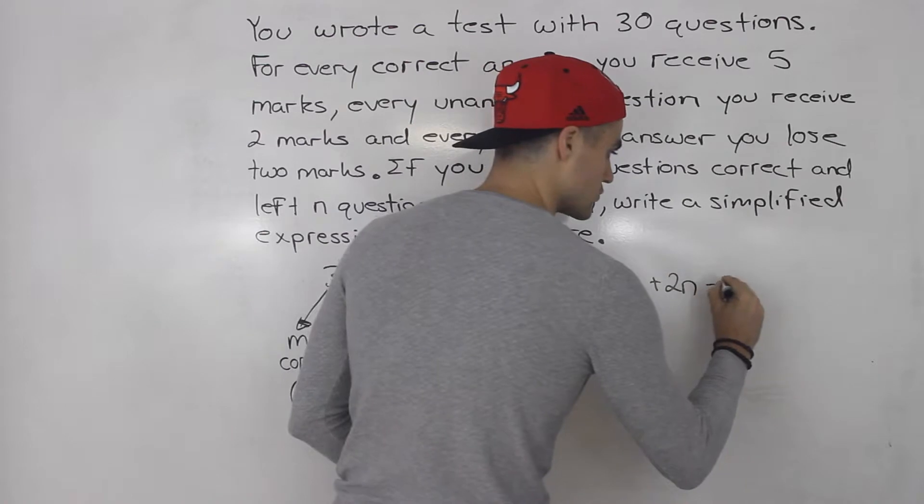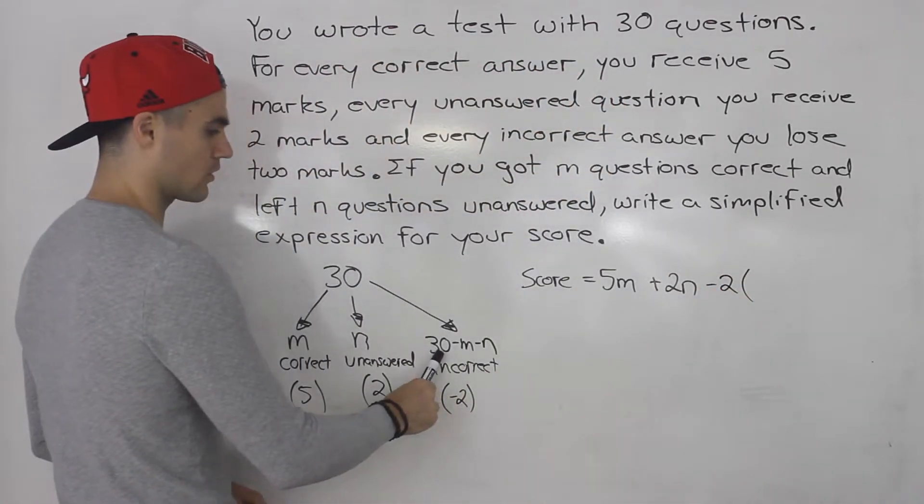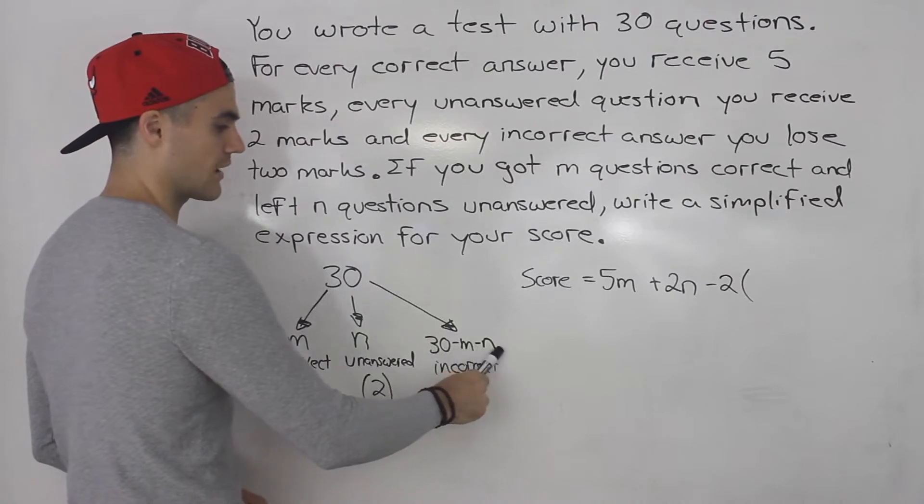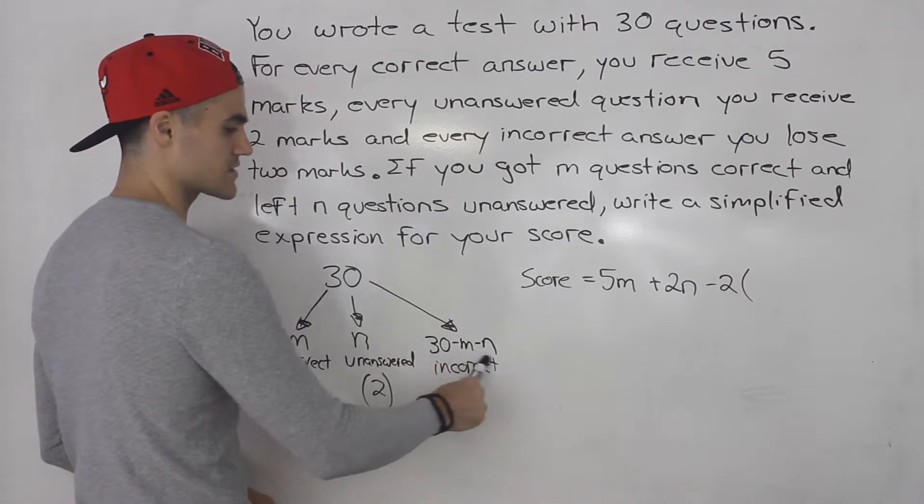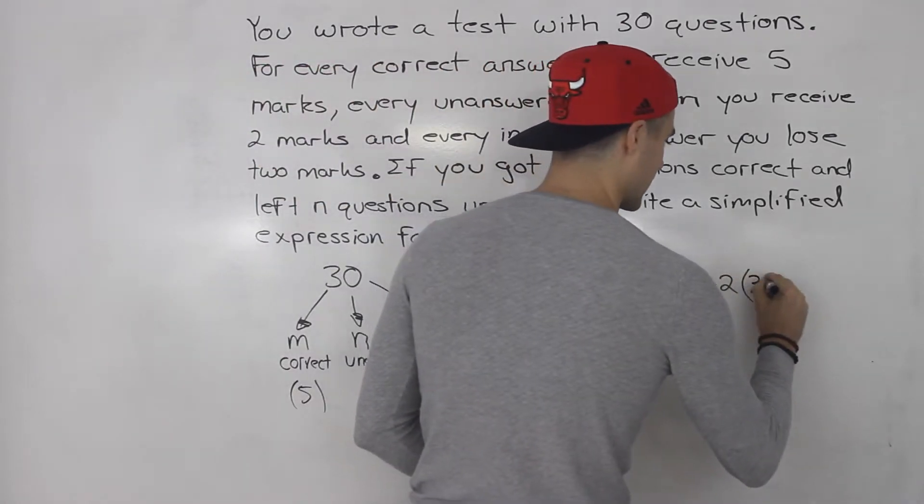And then you are losing 2 marks. So you put a minus 2 here for all of the questions you get incorrect. And all the questions you get incorrect is 30 minus M minus N. So you would put that in brackets.